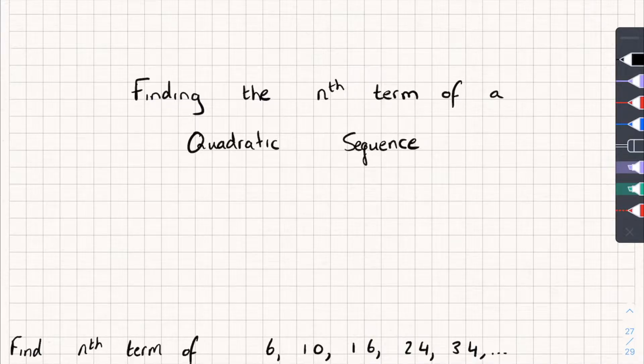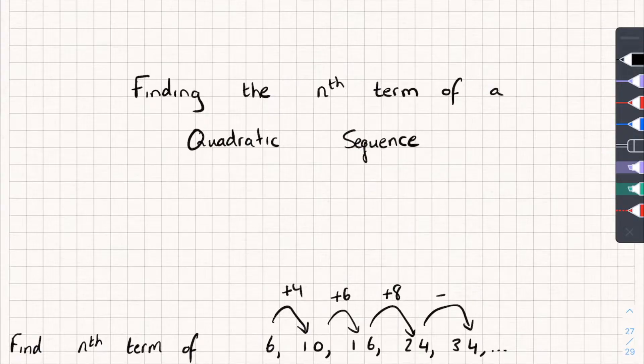So the first thing we're going to see is how do I know if my sequence that I've been given is quadratic? Well, I've got one here, and all we're going to do is look at the difference between each term. So the first one, that's plus 4, the next one, that's plus 6, the next one, that's plus 8, and so on, plus 10.